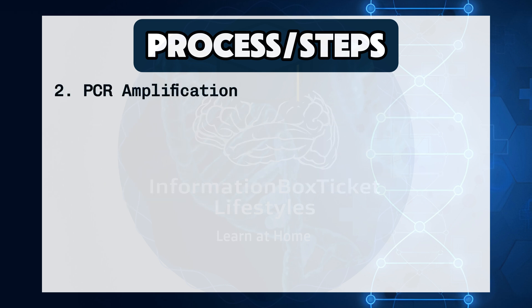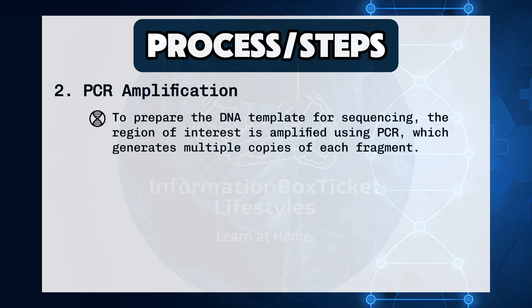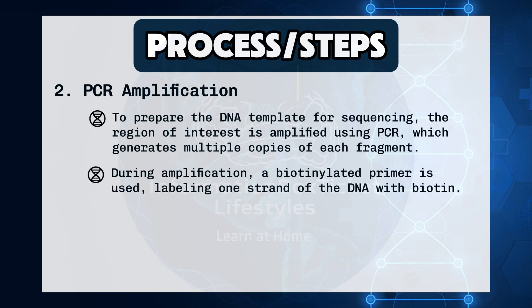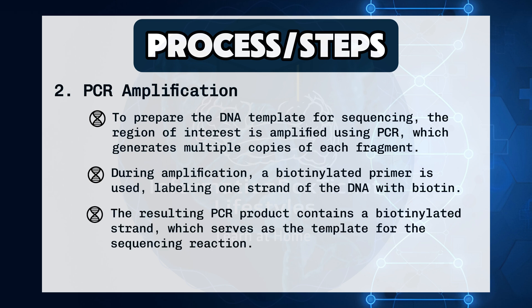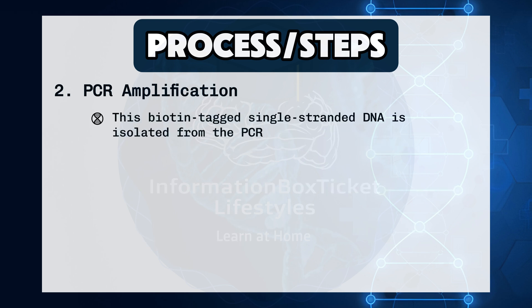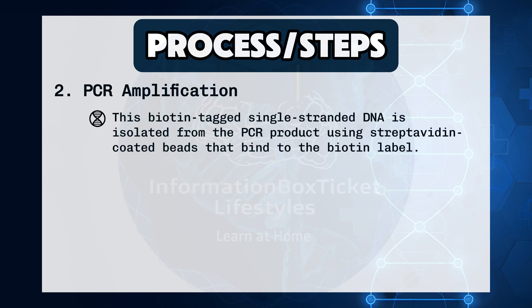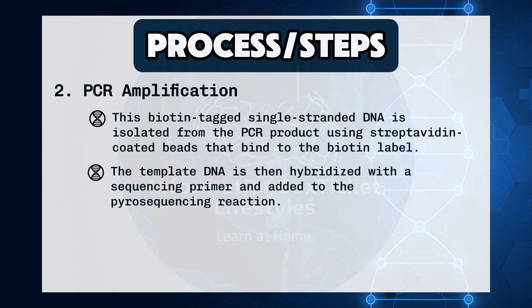Step 2 - PCR Amplification: To prepare the DNA template for sequencing, the region of interest is amplified using PCR, which generates multiple copies of each fragment. During amplification, a biotinylated primer is used, labeling one strand of the DNA with biotin. The resulting PCR product contains a biotinylated strand, which serves as the template for the sequencing reaction. This biotin-tagged single-stranded DNA is isolated using streptavidin-coated beads, then hybridized with a sequencing primer and added to the pyrosequencing reaction.